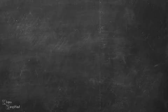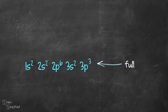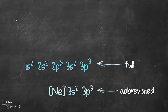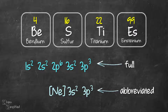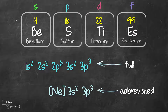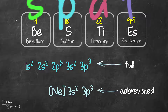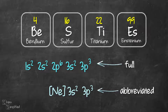We'll go over how to write the electron configuration for both the full and the abbreviated electron configuration for four elements — an example from each block: S, P, D, and F. This will get you ready for your next quiz or test on electron configuration.